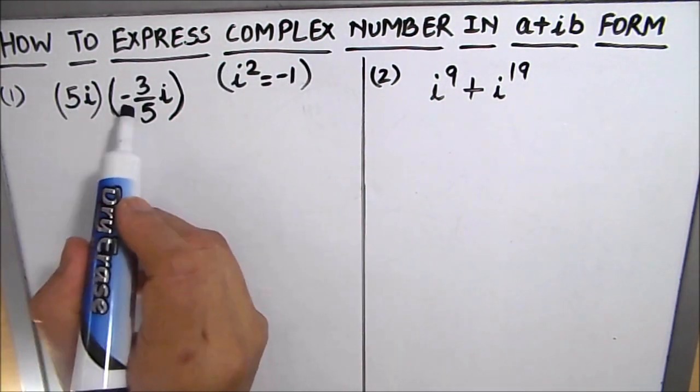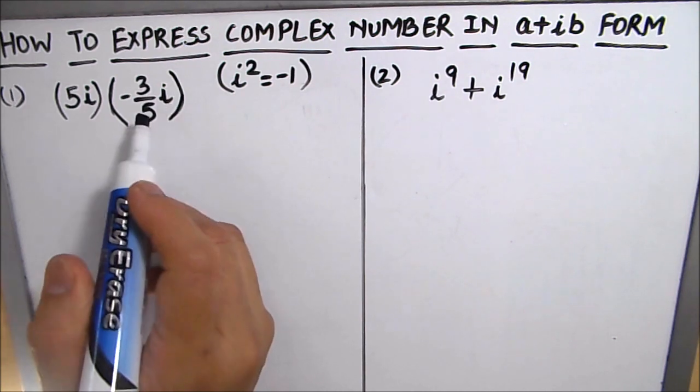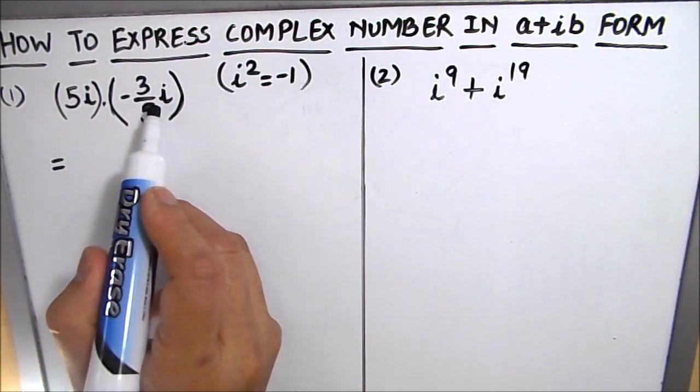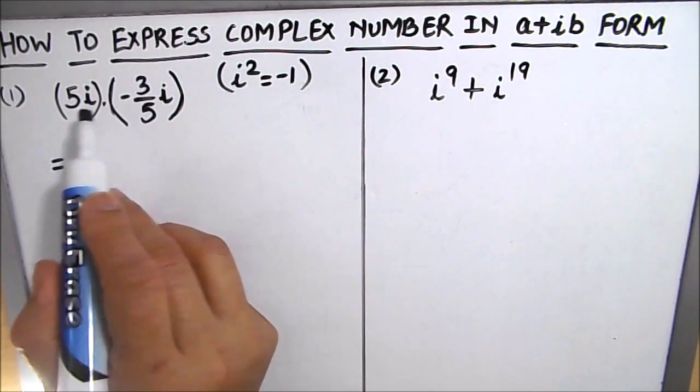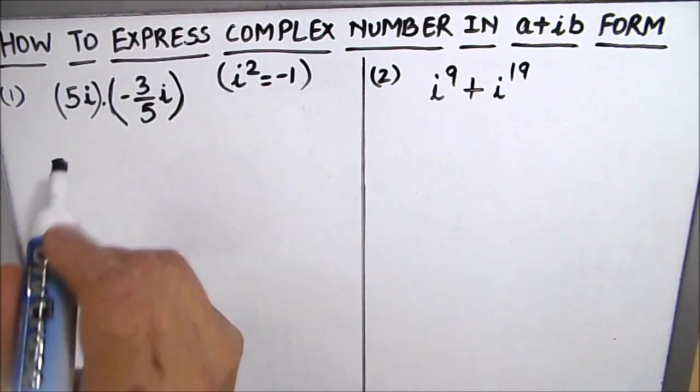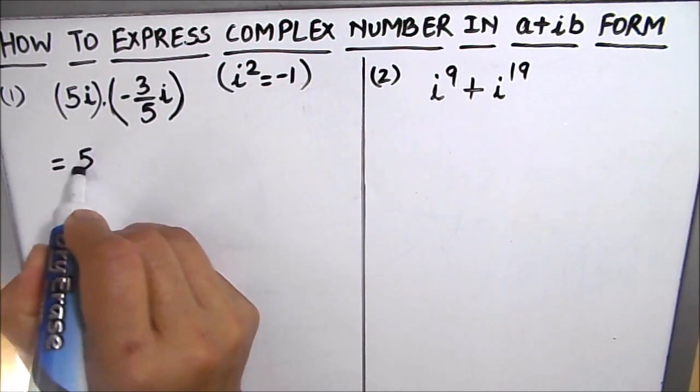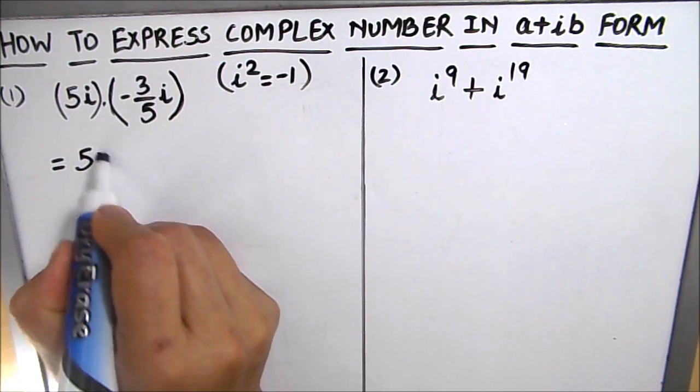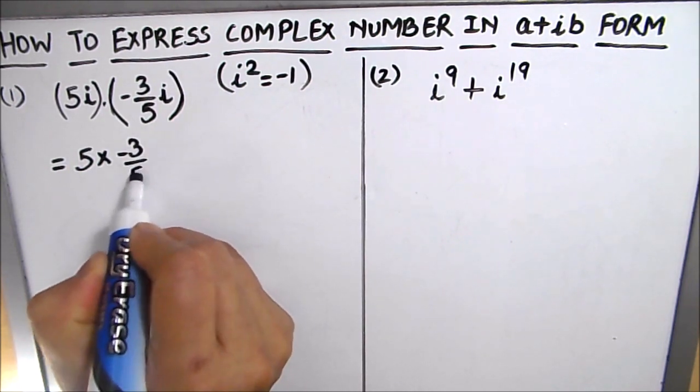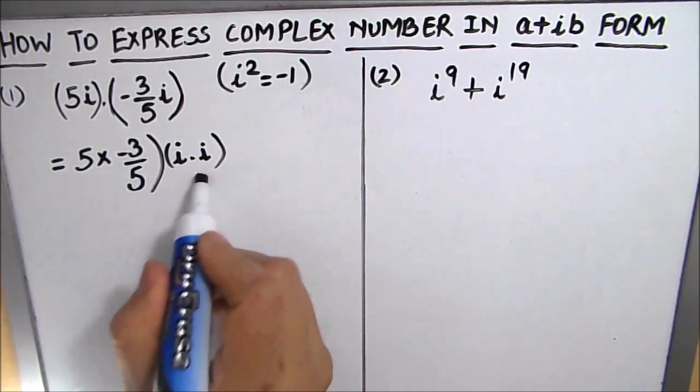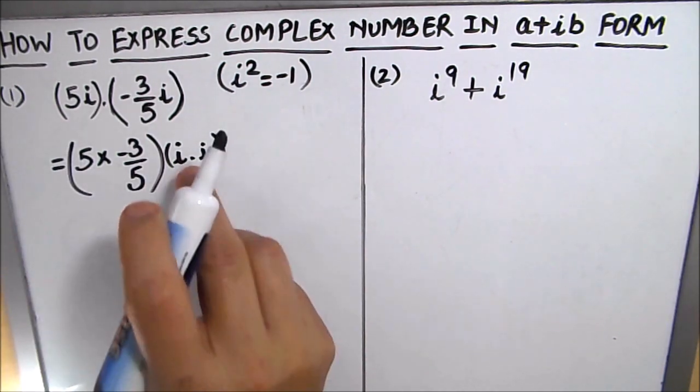5 iota times minus 3 over 5 iota. These two numbers are getting multiplied, so we are going to do the multiplication and write the answer. So we are going to multiply the real number part by the real number part and the imaginary part by the imaginary part.